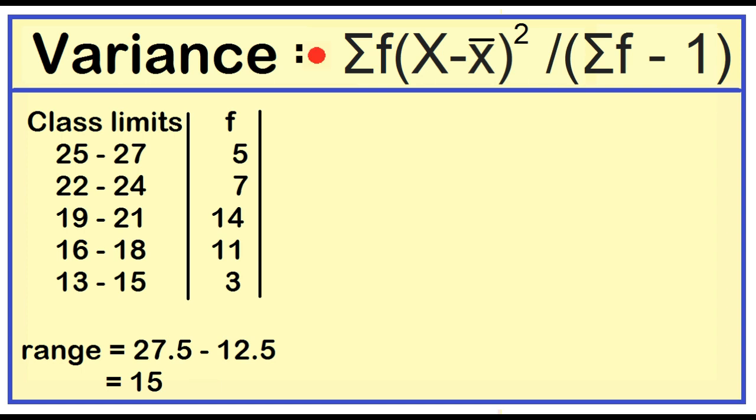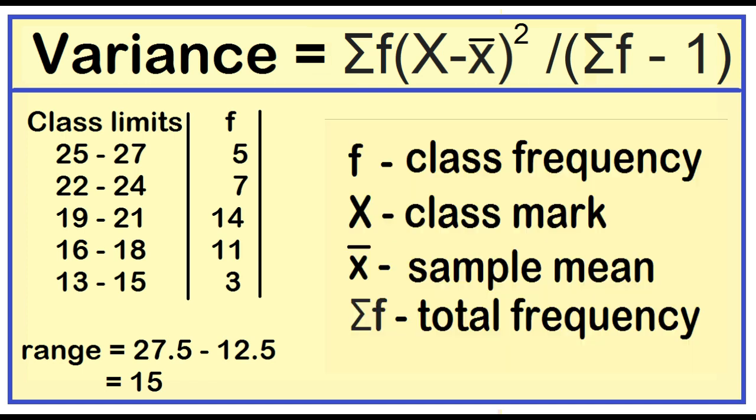Variance equals the sum of the product of the frequency and the squared deviation all over the total frequency minus 1. Where f is the class frequency, capital X is class mark, x̄ is sample mean, and summation of f is total frequency.